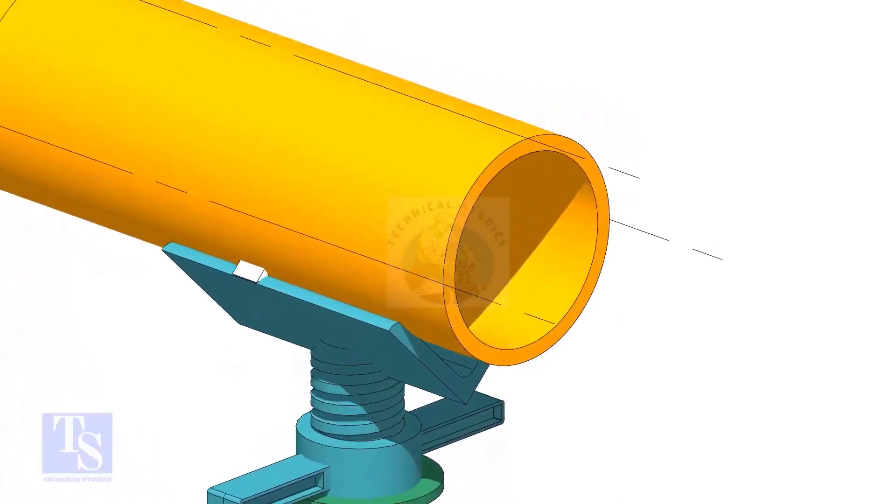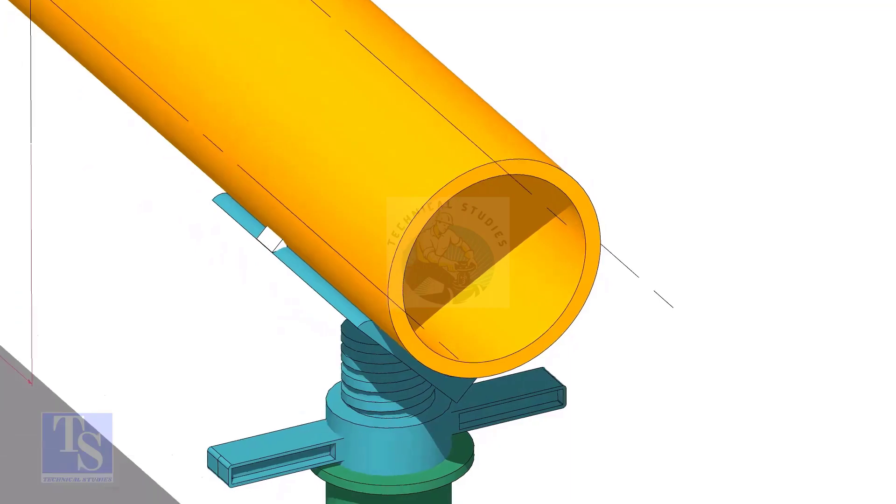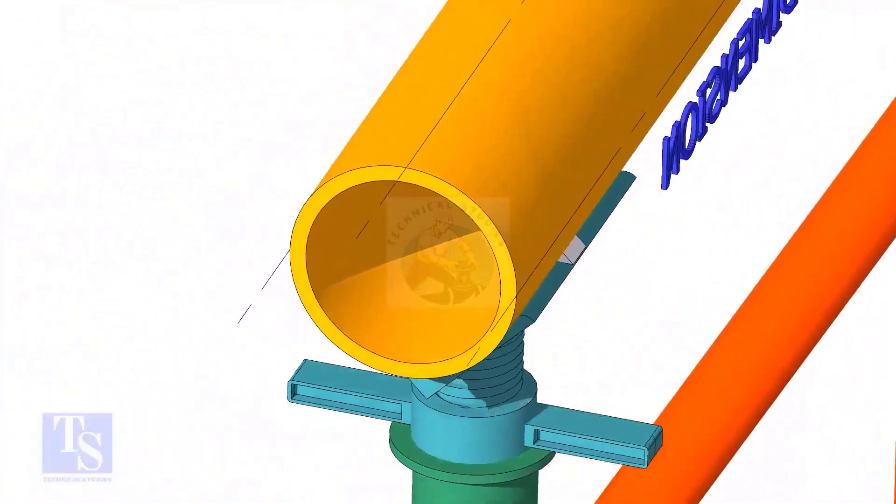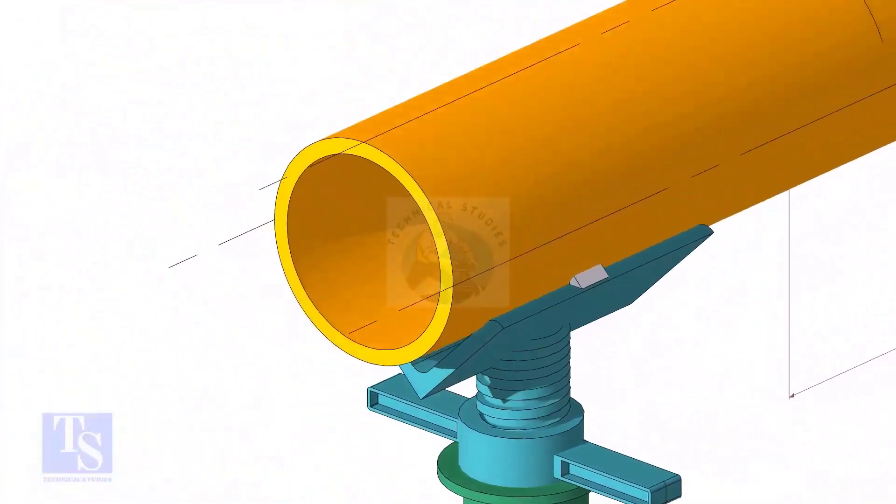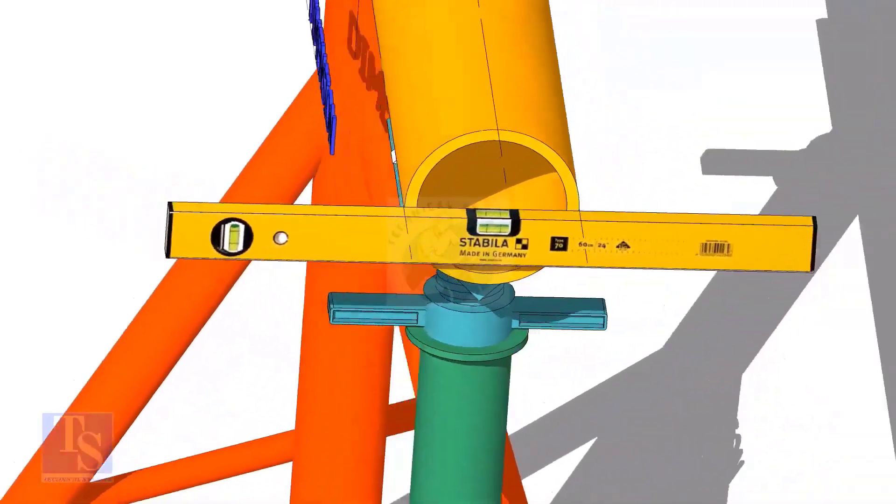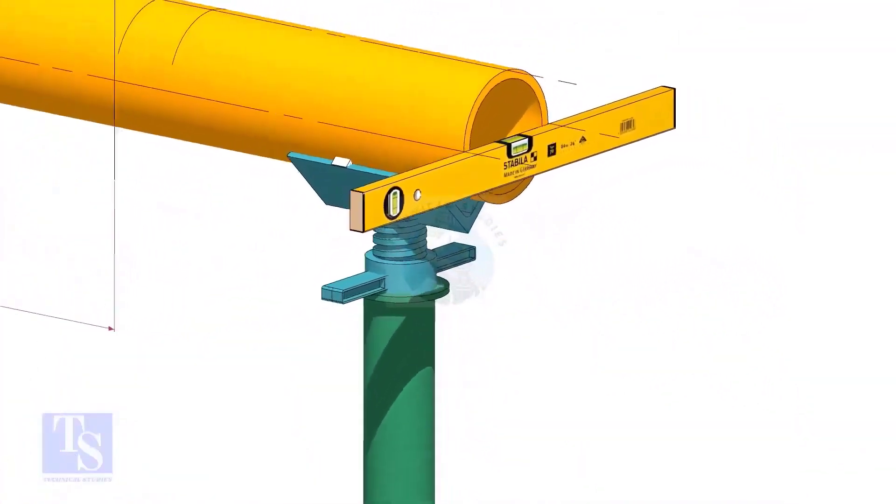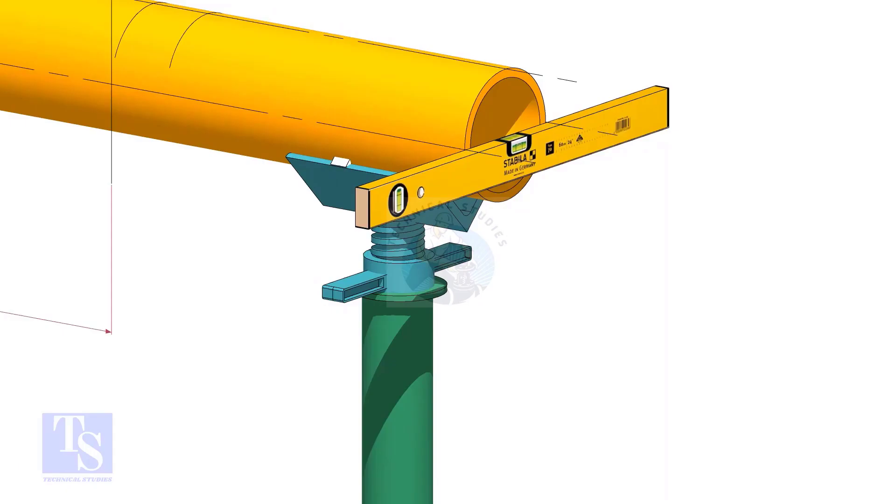After leveling the pipe, mark the center line and two quarter lines. Arrest the pipe. If required, make small tack welds.